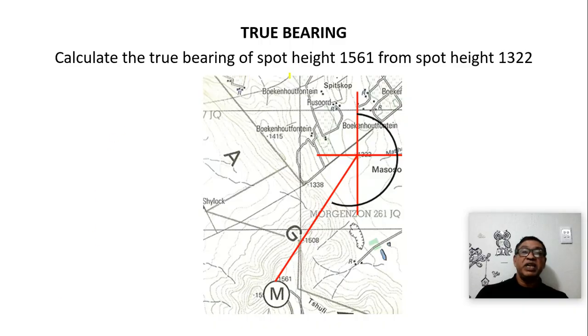So let's go towards the true bearing. Calculating the true bearing of spot height 1561 from spot height 1322. So we're standing here and we're there. We always draw our cross on the from point and we measure from the true north in a clockwise direction.